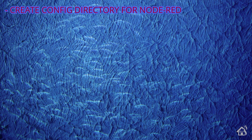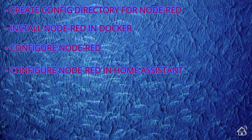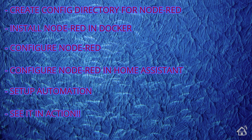Let's do a quick run through everything we're going to cover in this video. For starters we're going to create a config directory for Node-RED, add it as a volume in Docker Compose so that if we ever need to make changes outside the container or have to delete and recreate it, we can point it right back at our existing Node-RED setup. Once we do that we'll install Node-RED in Docker using Docker Compose. Then we're going to configure Node-RED, configure Node-RED in Home Assistant, set up an automation, and lastly I'll show you what that looks like in action. Let's get started.